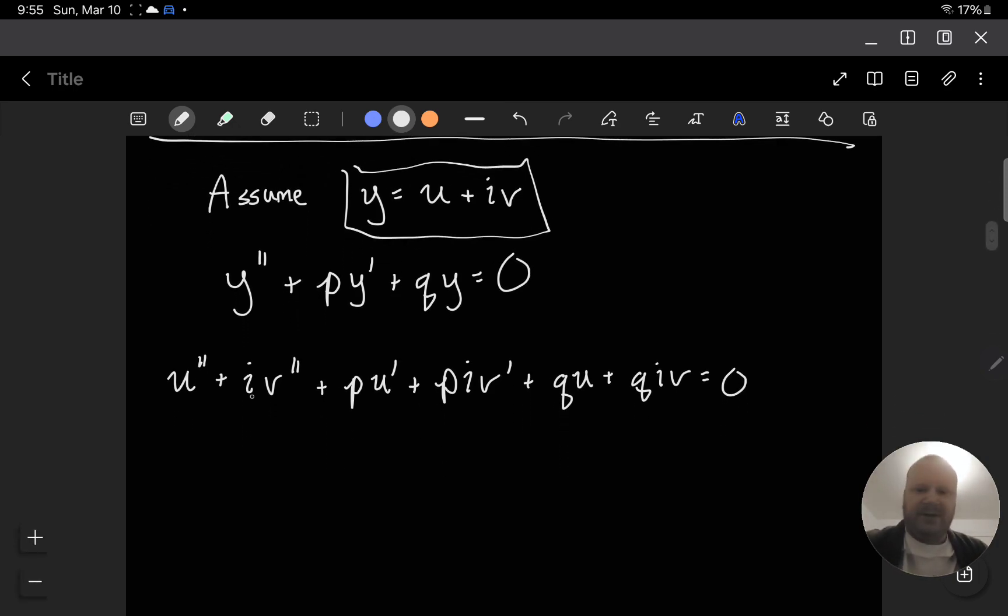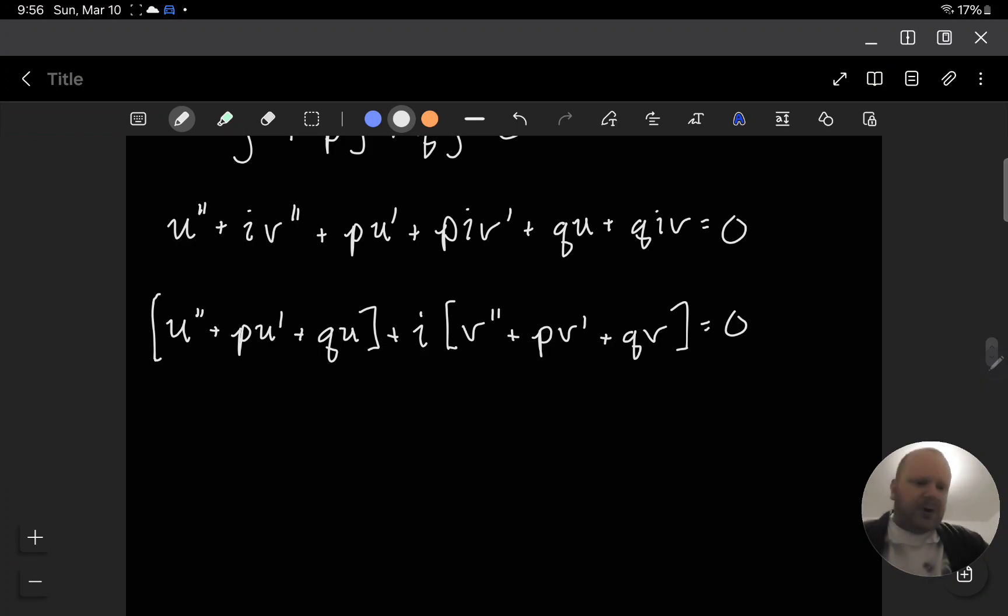And then, if we group all of these in terms of their either ones that have a real component or imaginary component, we get two sets here. The first one is, I'll put a big bracket around this. So, this is going to be u double prime plus p times u prime plus q u. And then, this imaginary part here, so everything with the i out in front of it, and that's equal to zero.